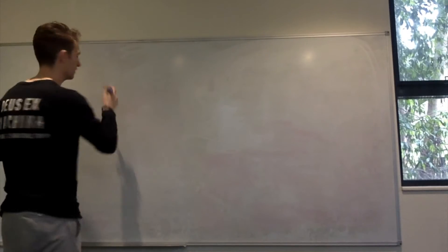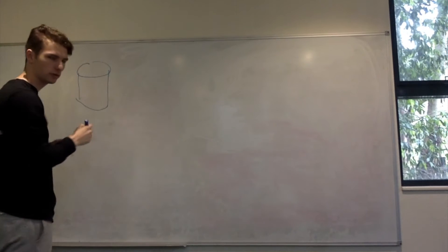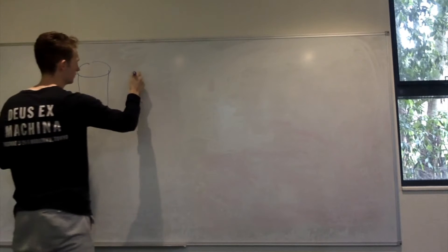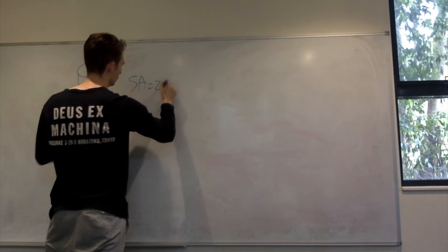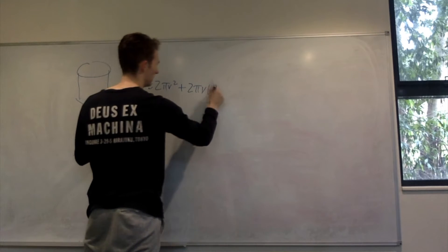Thanks, Caitlin. So if we start with the cylinder, we know we've got a circle on the top, a circle on the bottom, and then a curved surface. So if we're going to find the least material, we need the least surface area. Surface area equals the two circles, 2πr², plus the curved surface, 2πrh.